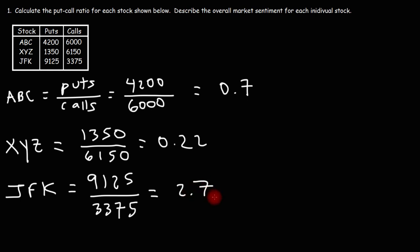So now that we have the put-call ratio for each individual stock, what does it tell us? Describe the overall market sentiment for each individual stock. When the put-call ratio is high, this tells you that stock traders are bearish on the market. Now, why can we say that? Well, we need to understand what a put and a call option is.